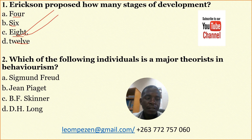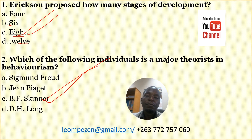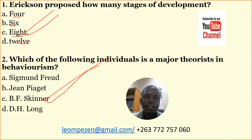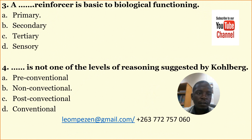Number two: Which of the following individuals is a major theorist in behaviorism? A: Sigmund Freud, B: Jean Piaget, C: BF Skinner, D: DH Long. The correct answer here is BF Skinner. Remember, Sigmund Freud is a psychoanalyst and Jean Piaget is a cognitive theorist, so the correct answer here is C: BF Skinner.